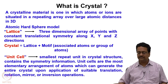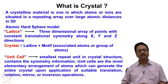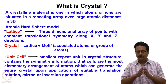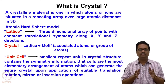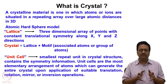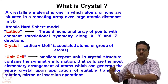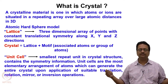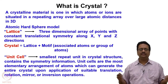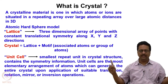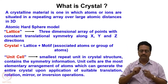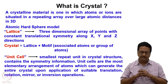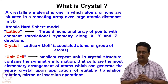First of all, what is a crystal? A crystalline material is one in which atoms or ions are situated in a repeating array over large atomic distances in 3D. Suppose in this room we have one atom at a particular position; in the next room on the right it will have the same position, and so on. This is periodic in one direction, and the same periodicity is valid in the x, y, and z directions. That periodicity is the most important aspect in crystal structure and must always be maintained to have a crystal lattice.